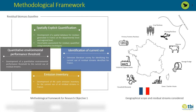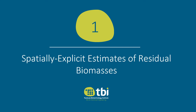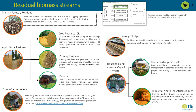The geographical scope of the study was metropolitan France and we selected eight major streams. These are: primary forestry residues, crop residues, pruning residues, manure, green and garden waste, seaweed sludge, household waste, and agro-industrial residues.